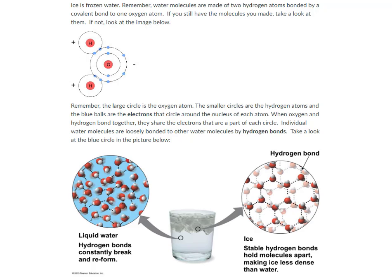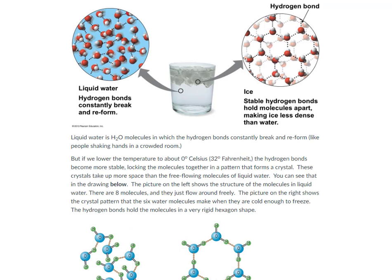Individual water molecules are loosely bonded to other water molecules by hydrogen bonds. Take a look at the blue circle in the picture. Liquid water is H2O molecules in which the hydrogen bonds constantly break and reform, like people shaking hands in a crowded room.